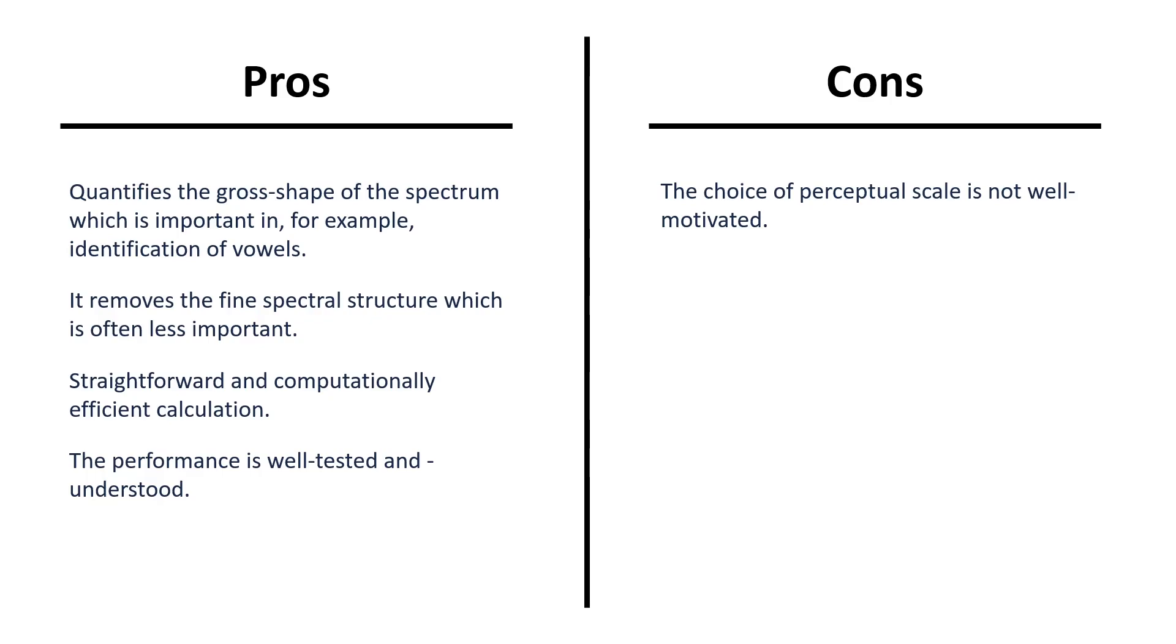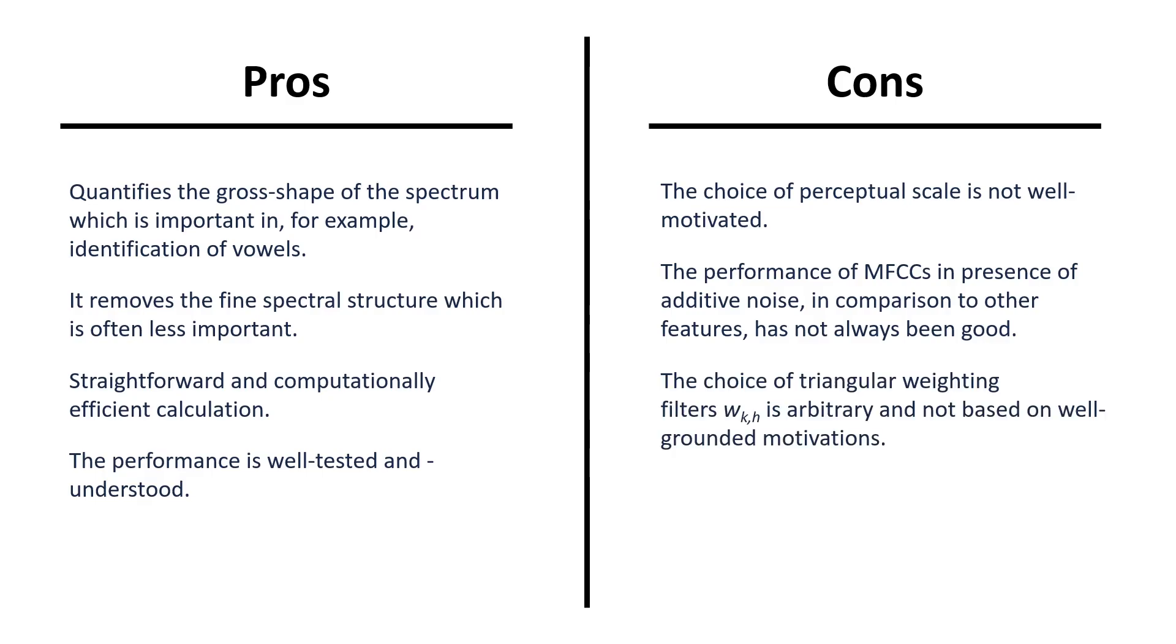For disadvantages, we have that the choice of perceptual scale is not well motivated. Also, the performance of MFCC in presence of additive noise in comparison to other features has not always been good. Also, the choice of the triangular windowing filters is arbitrary and not based on well-grounded motivations.